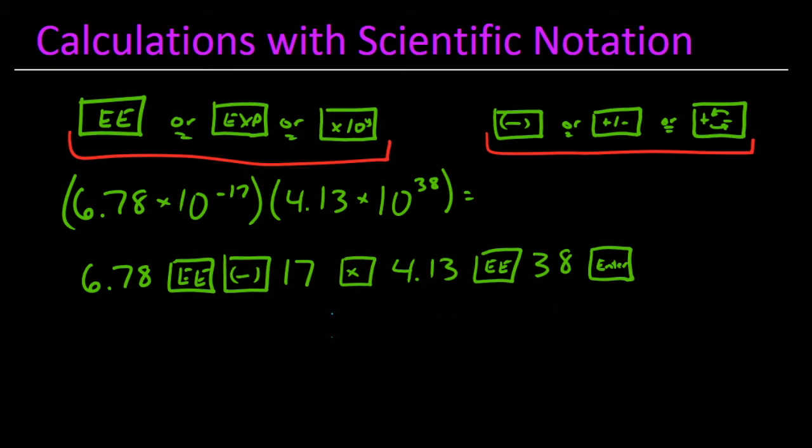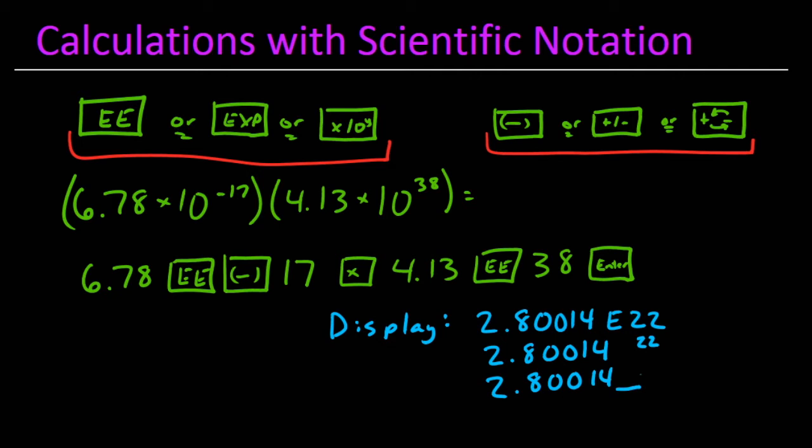Upon executing the calculation, your calculator will display the answer in one of at least four different ways. It's up to you to determine what that displayed answer means. In each case we can see we have 2.80014 and then we have the number 22 shown several different ways. We should interpret each of these answers as 2.80014 times 10 to the 22nd.